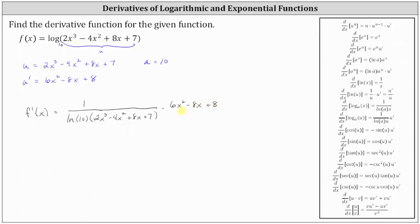If you want, we can write this as a fraction with a denominator of one. Nothing's going to simplify, but we could factor out the greatest common factor of two from the numerator. So the derivative is f prime of x equals two times the quantity three x squared minus four x plus four divided by the product of natural log 10 and the quantity two x cubed minus four x squared plus eight x plus seven.